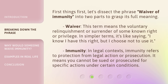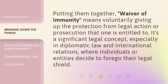First things first, let's dissect the phrase waiver of immunity into two parts to grasp its full meaning. Waiver: this term means the voluntary relinquishment or surrender of some known right or privilege. In simpler terms, it's like saying, I know I have this right, but I choose not to use it. Immunity: in legal contexts, immunity refers to protection from legal action or prosecution — it means you cannot be sued or prosecuted for specific actions under certain conditions. Putting them together, waiver of immunity means voluntarily giving up the protection from legal action or prosecution that one is entitled to.